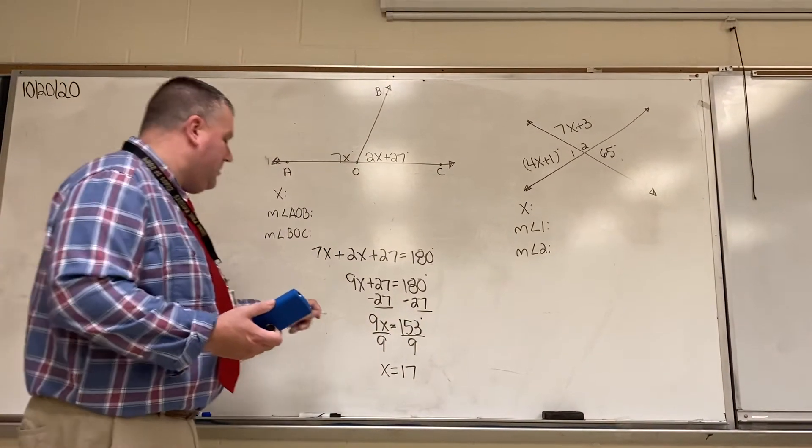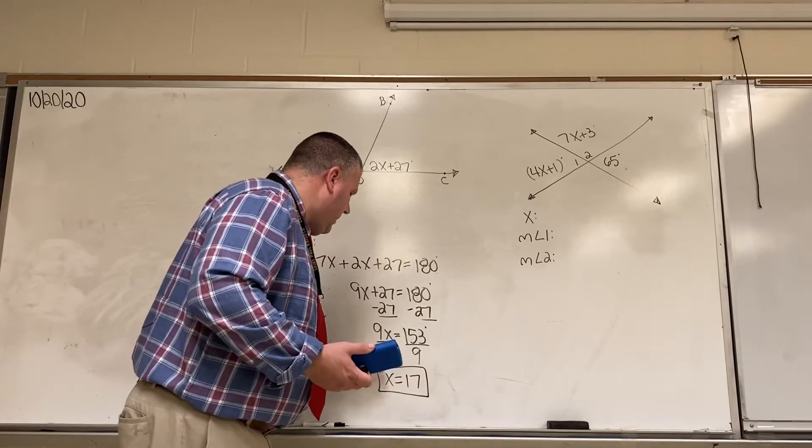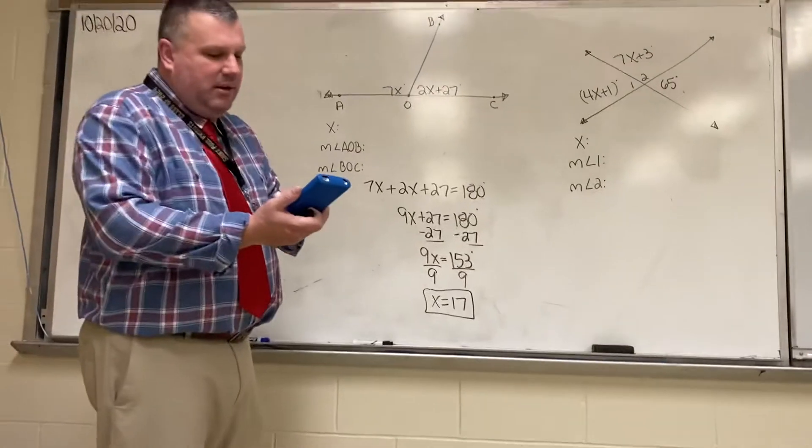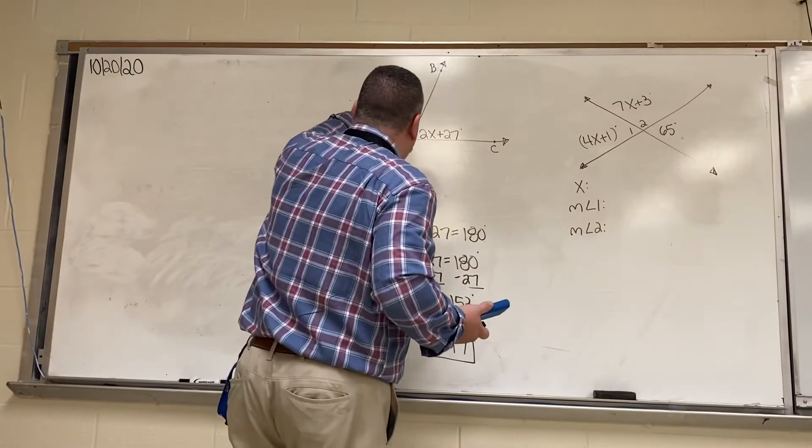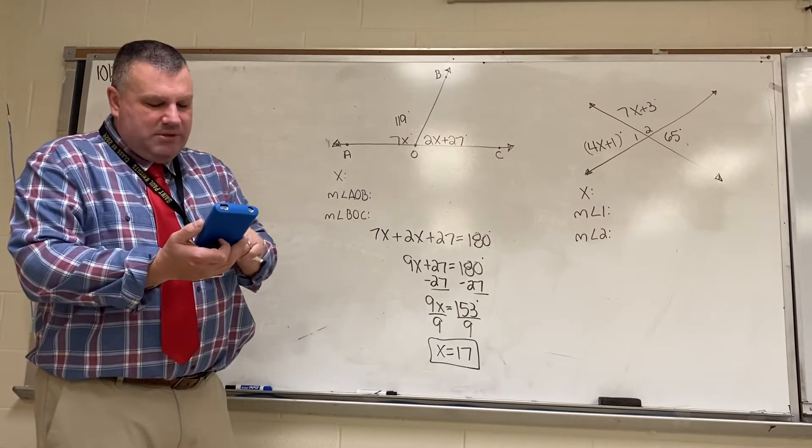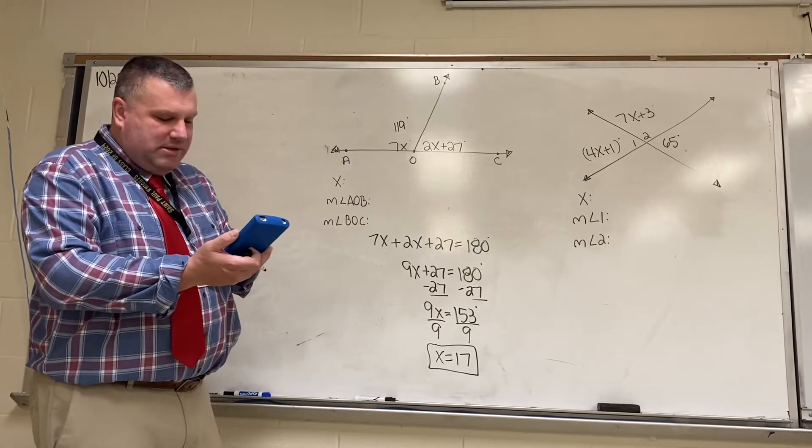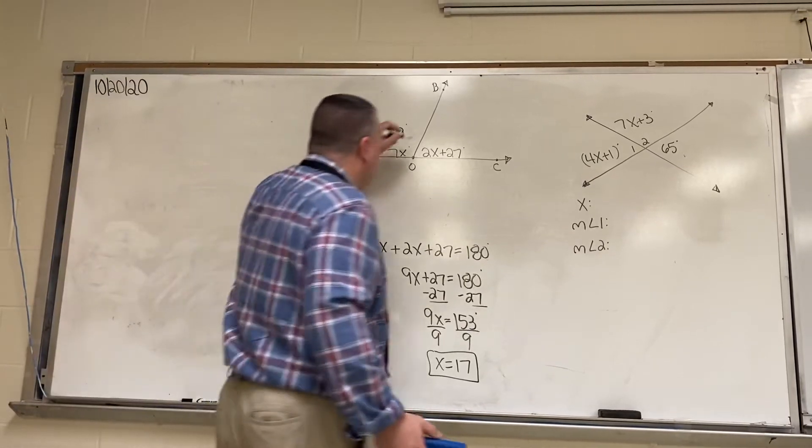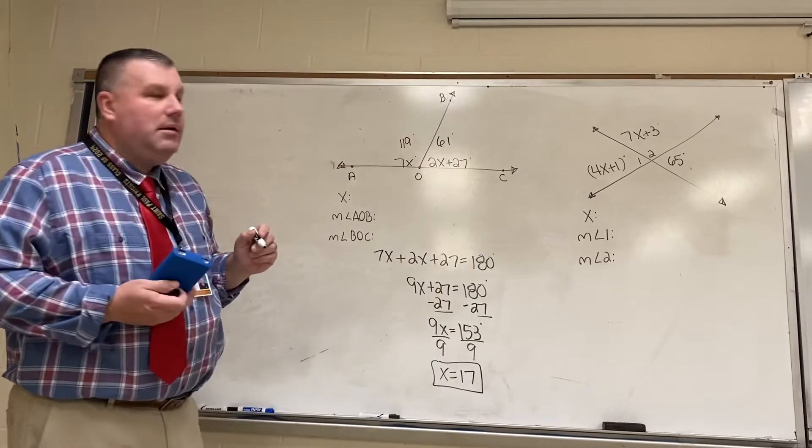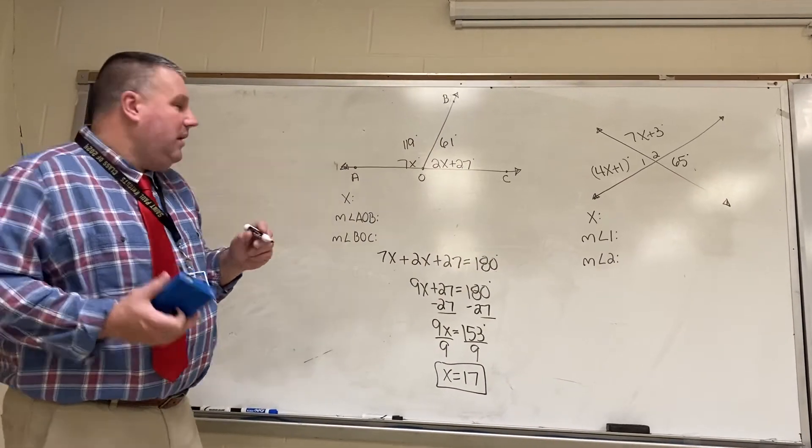Let's go back and plug that in to make sure that our angles are equal to 180 degrees. So, I'm going to do 7 times 17. This angle here is 119 degrees. So, I'm going to do 2 times 17 plus 27 is equal to 61 degrees. And, if we add up 119 and 61, that is equal to 180 degrees.